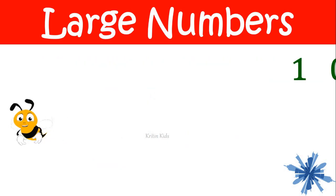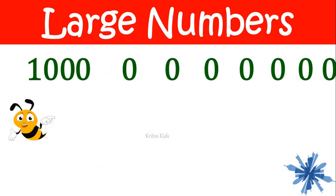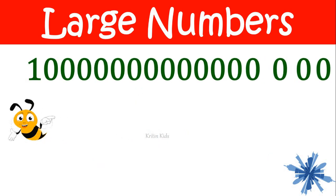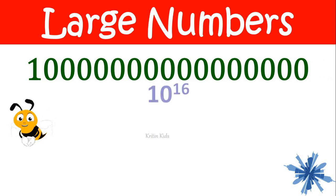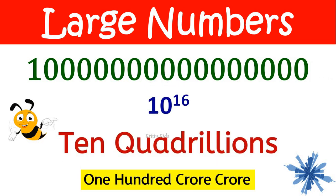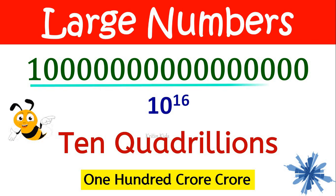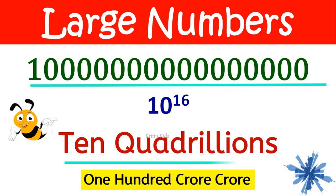Then if I add one more zero, it becomes one hundred crore crore. One followed by sixteen zeros is ten quadrillion.